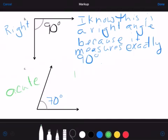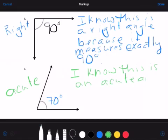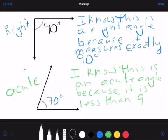And then I need to write a sentence. We write our sentence to explain. I know this is an acute angle, because, and then how do you know? Because it is less than 90 degrees. Or you could be more specific, because it measures less than 90 degrees. Something like that. That's it for number two. Good job.